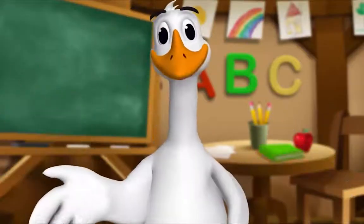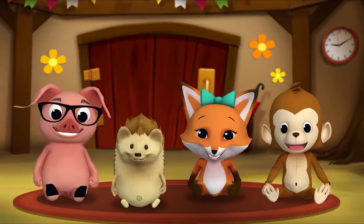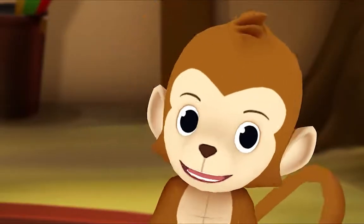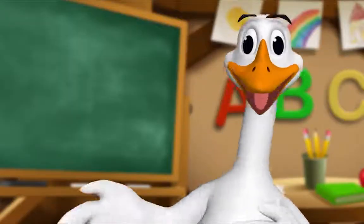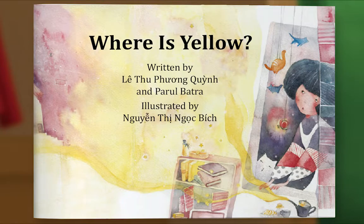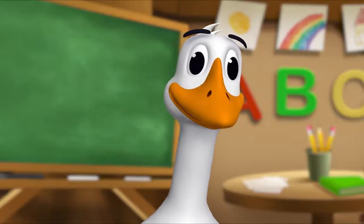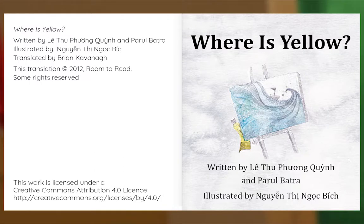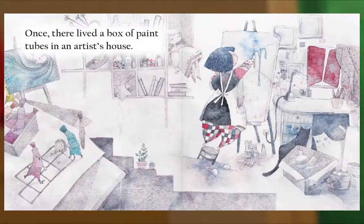Gather round, everyone! What book are we reading? We're reading this one — it's called Where is Yellow? What would happen if the color yellow decided to disappear? Let's read and find out. Let's begin. Where is Yellow? Written by Leitu Fongquin and Paru Batra. Illustrated by Gwinting Nokbik. Once there lived a box of paint tubes in an artist's house.